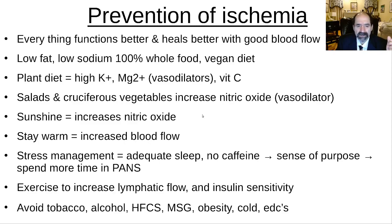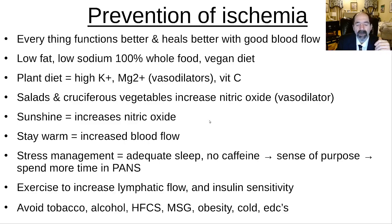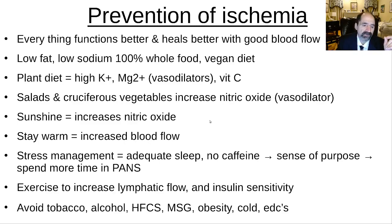Stress management is important. You want to spend as much time as possible in PANS — parasympathetic autonomic nervous system — instead of SANS, the sympathetic autonomic nervous system, because your blood flow is better in that state. When you're stressed, blood flow is not as good to the primary tissues you'd want it to be. Avoid things the body perceives as stress. Get your sleep — sleep deprivation is perceived as stress. Avoid caffeine; I recommend no caffeine. Have a good sense of purpose in your life, because it makes you more resilient and increases your ability to handle stress without vascular complications. Exercise gets your lymphatic flow going, cleaning out extracellular matrices and optimizing immune function. The most important thing by far is diet, but all these other things are complementary.